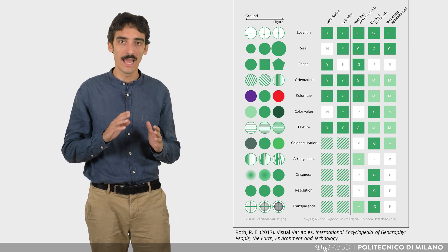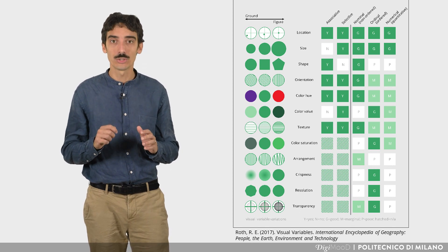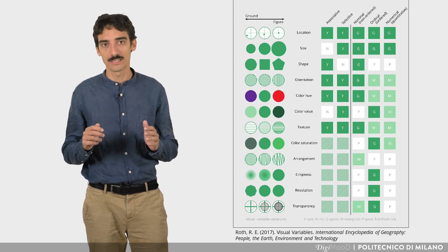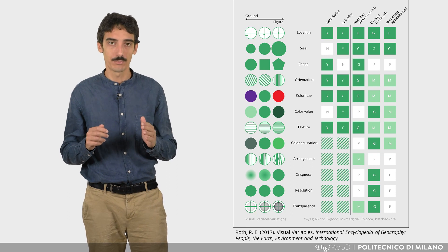But also to show order, like in the case of a list, or quantities, for example, in a scatter plot.